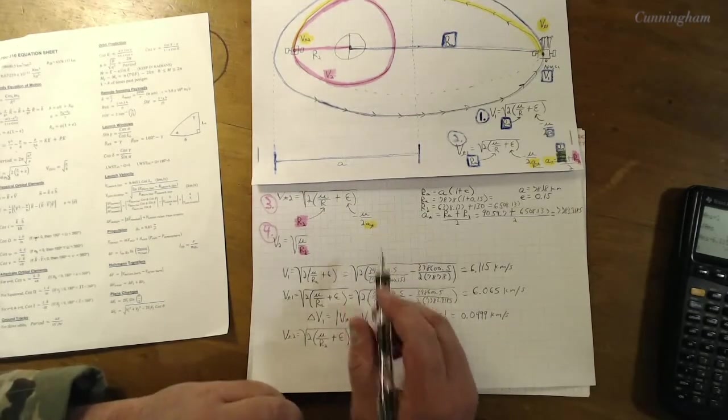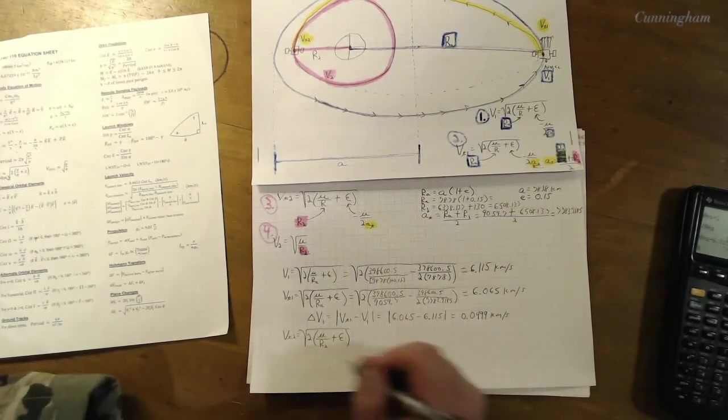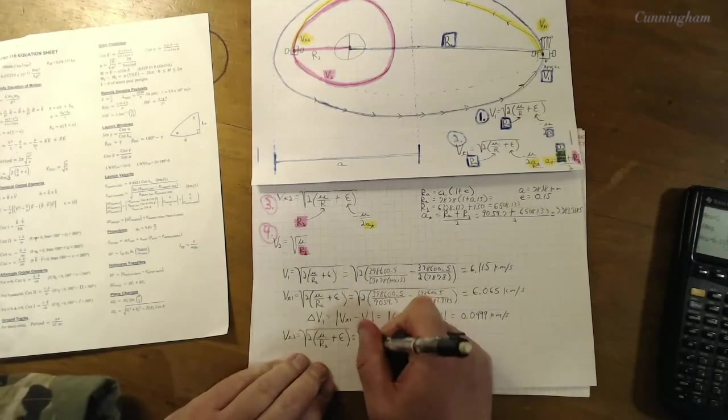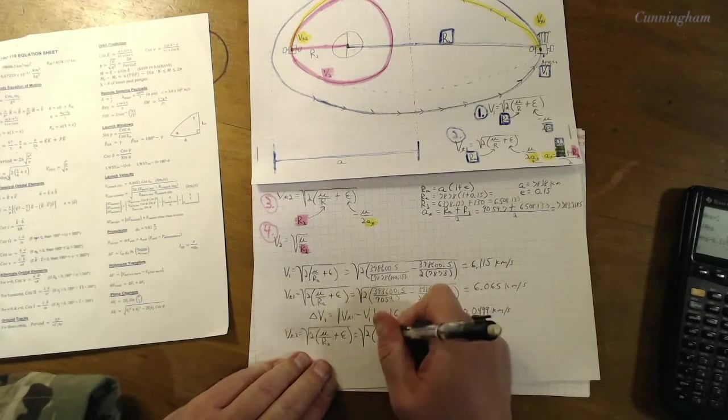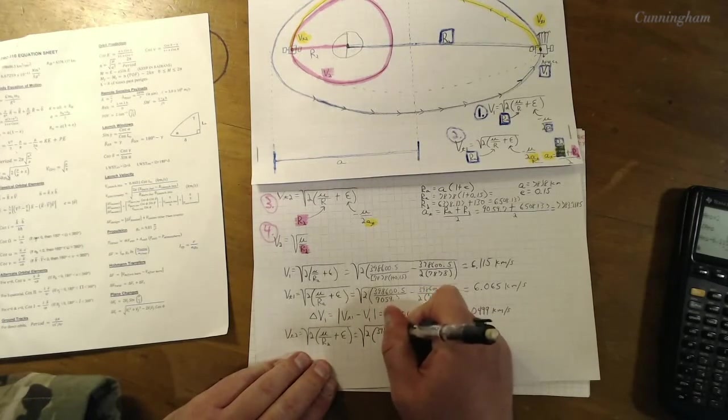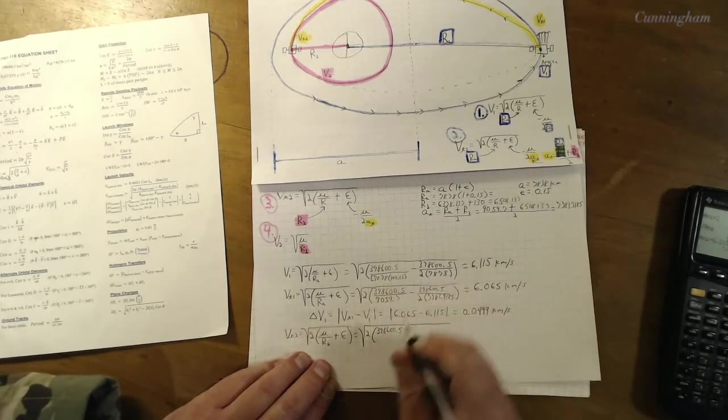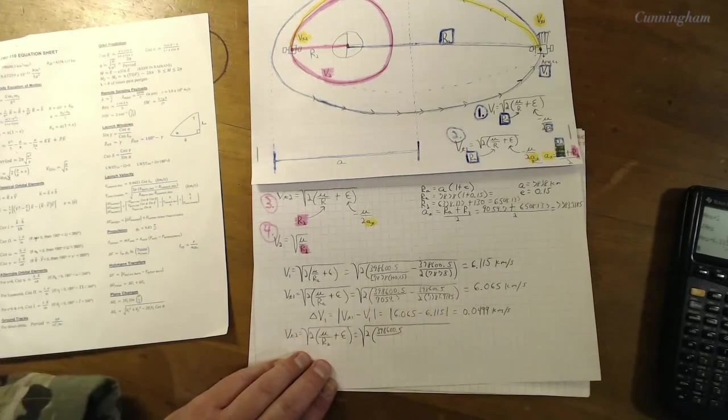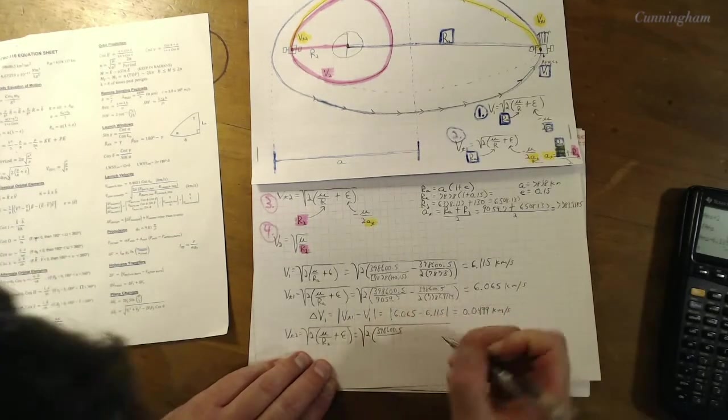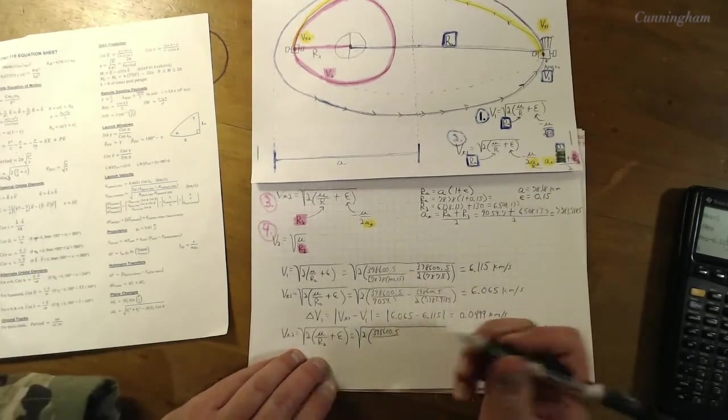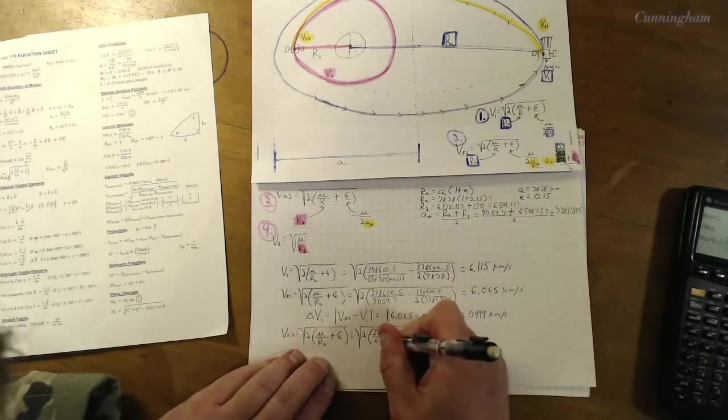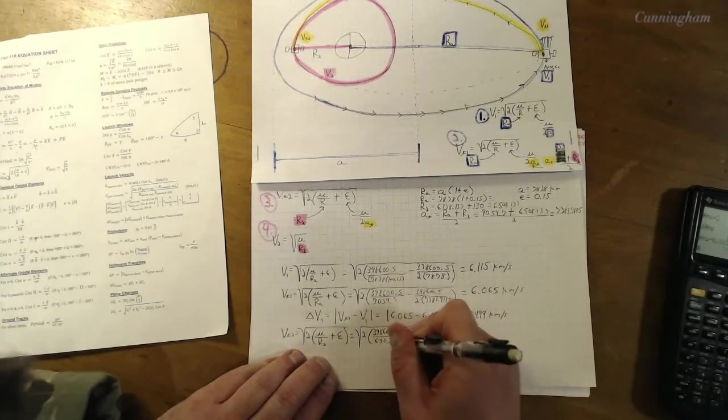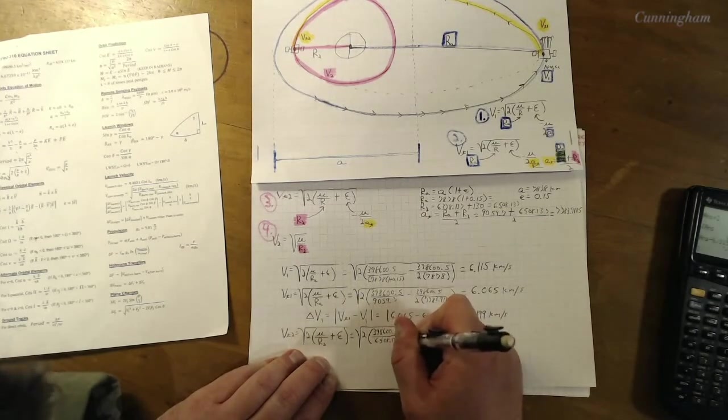If you guys remember, we've traveled all the way through our transfer orbit, now we're about to do the second burn out there at v sub t2. So we are r2 worth of kilometers away from the earth. Plus epsilon, and then this epsilon as we saw up here is going to be that semi-axis of the transfer orbit again, that's what we're going to use in that.